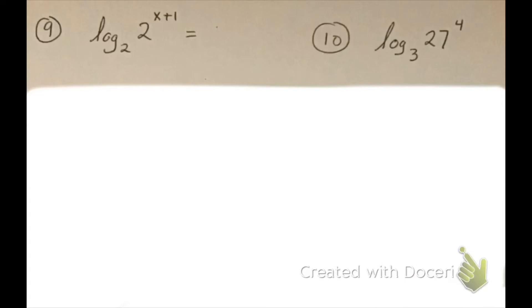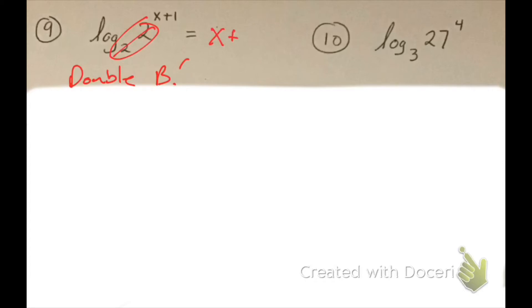Question 9: this one should take about 2 to 3 seconds to solve because it's the double-b case — those two numbers are the same so they cancel out, and my answer is just x plus 1.